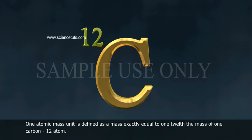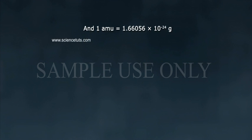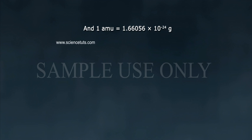One atomic mass unit is defined as a mass exactly equal to one twelfth the mass of one carbon-12 atom, and one atomic mass unit equals 1.66056 × 10⁻²⁴ grams.